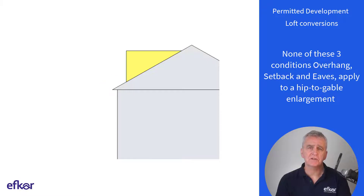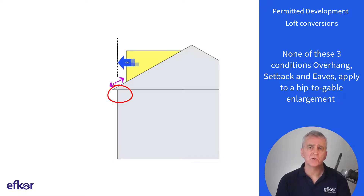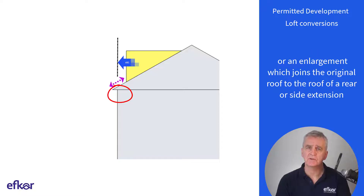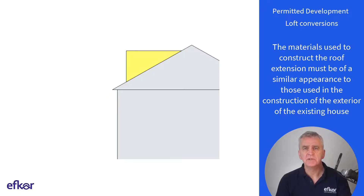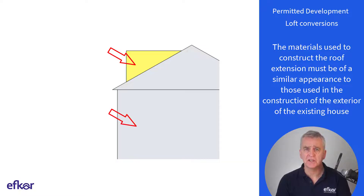None of these three conditions — overhang, setback, and eaves — apply to a hip-to-gable enlargement or an enlargement which joins the original roof to the roof of a rear or side extension. The materials used to construct the roof extension must be of a similar appearance to those used in the construction of the exterior of the existing house.